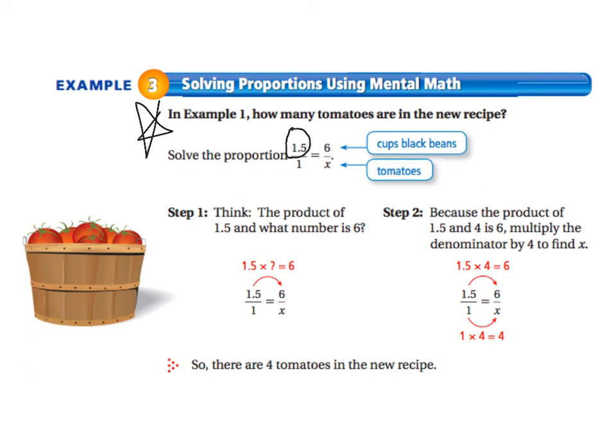Remember 1.5 cups of black beans gave us a recipe with 1 tomato and 6 cups of black beans gives us a recipe with x tomatoes. So we want to know how many tomatoes do we need to go out and buy if we're going to use 6 cups of black beans. So it says think the product of 1.5 and what number is 6? Well that sounds a little tricky at first but if we think about it it's not so bad.